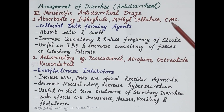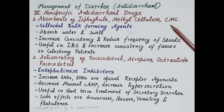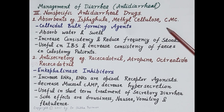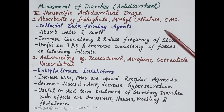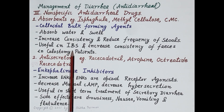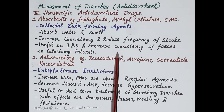Non-specific antidiarrheal drugs are of three types: absorbents, antisecretory drugs, and antimotility drugs. Absorbents like ispaghula, methylcellulose, and carboxymethylcellulose are colloidal bulk-forming agents. They absorb water and swell in the intestine, increasing consistency of stools and reducing their frequency. They are useful in the diarrheal phase of irritable bowel syndrome and in increasing consistency of feces in colostomy patients.